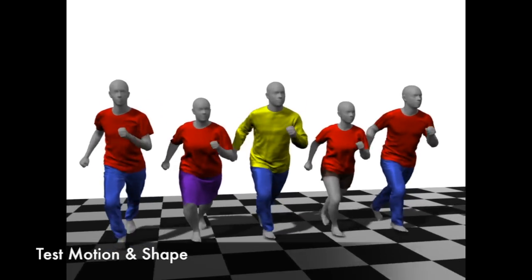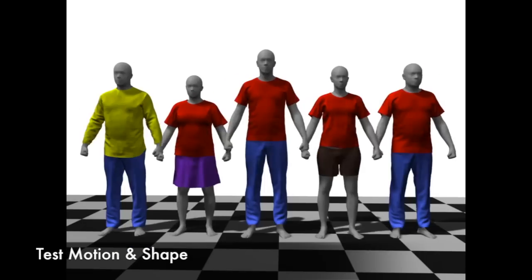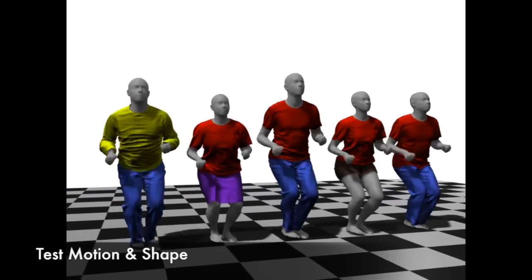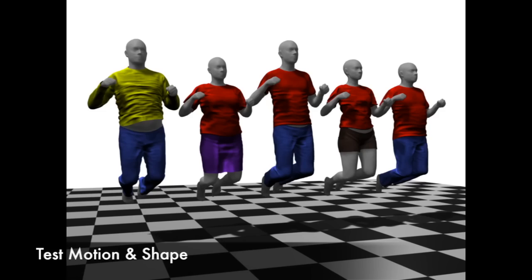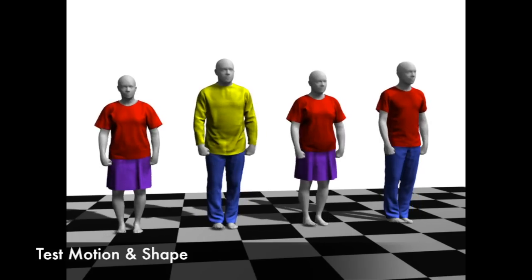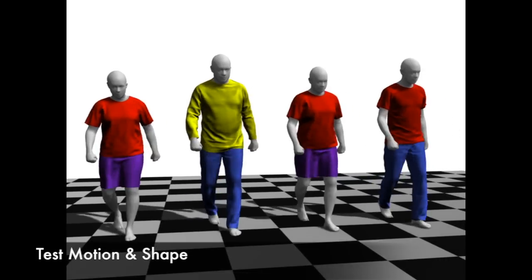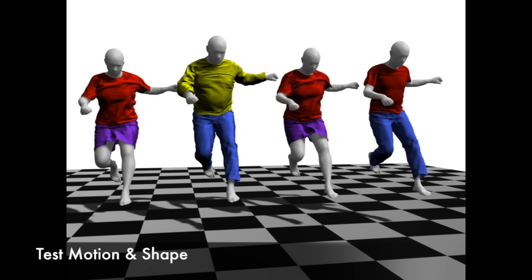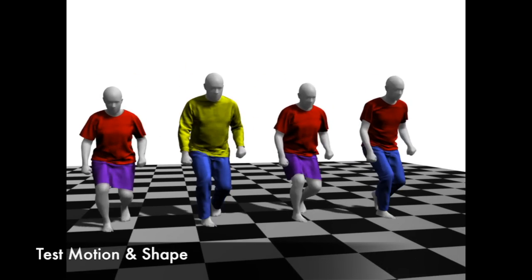We now show results where neither the body shapes nor the pose sequences appear in the training set. Note how drape realistically captures the dynamics of clothing during jumping. Here the synthetic bodies jump over an obstacle. Note how the skirt flies upward in a realistic manner.